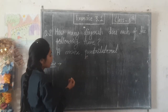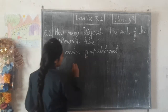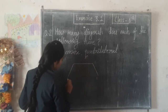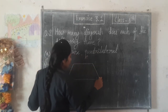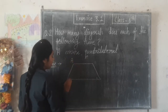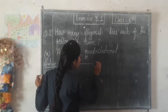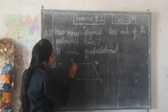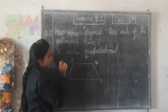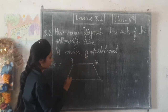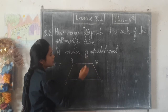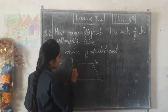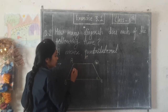A quadrilateral has four sides: 1, 2, 3, and 4. We label the vertices A, B, C, and D. For a convex quadrilateral, all angles are less than 180 degrees.